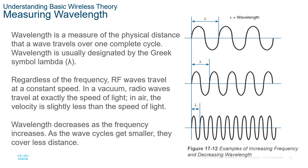Wavelength is the physical distance a wave travels over one complete cycle, normally designated by the Greek letter lambda. Radio frequency waves travel at a constant speed — assumed to be the speed of light in a vacuum; in air, velocity is slightly less. The wavelength decreases as frequency increases: as the wave cycle gets smaller, it covers less distance but the frequency increases, which allows additional data to be sent, though the signal doesn't travel as far.